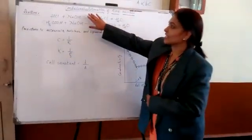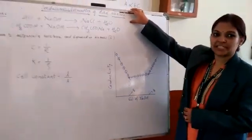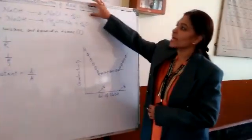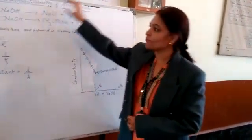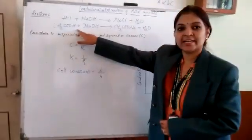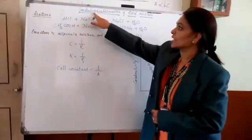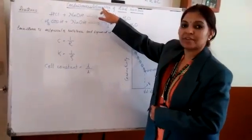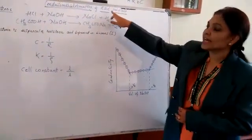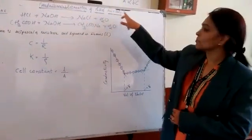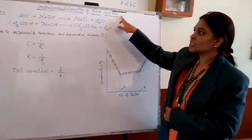Today we are learning the conductometric estimation of an acid mixture. The acid mixture contains HCl and acetic acid. This is a type of titration where you are estimating the different acids which are mixed together.